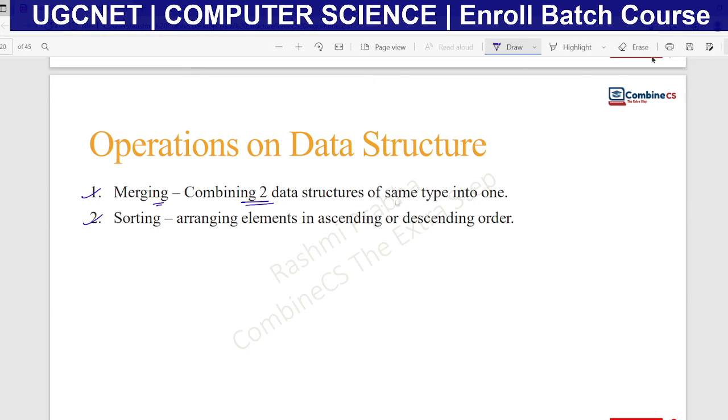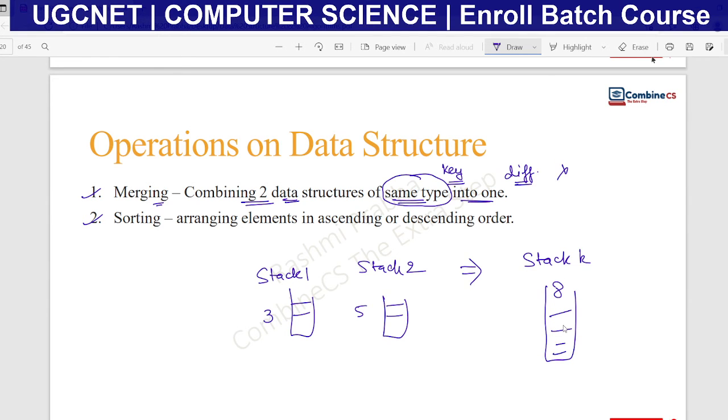Merging means combining two data structures of the same type into one. A very important keyword is same type—this is one of the interview questions. If they ask you about different types, different types we cannot merge. We have to merge the same type of data structure. Like we can merge stack one and stack two. Let's suppose the size of this stack is three and the size of this stack is five. Then after merging, I will get stack K and the size will be eight. We can insert eight elements in this stack. This is merging of two data structures.